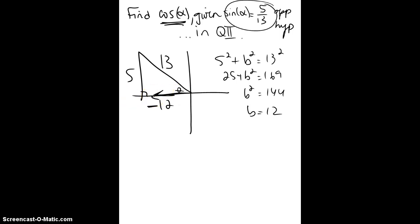So cosine is adjacent over hypotenuse, so here's my adjacent side, and there's my hypotenuse.